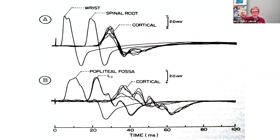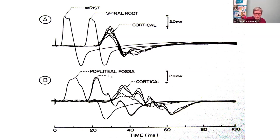Here's a practical example from that work. Looking at the top series of recordings: they were recording from my hand muscles, stimulating the nerve at the wrist, near the spinal cord, and then the opposite cortex. You can see the comparison between the cortical stimulus response, the stimulation of the spinal root, and at the wrist. All of this field business — I went back and looked at some of the work I'd done and thought, that's a good way of illustrating the field concept.